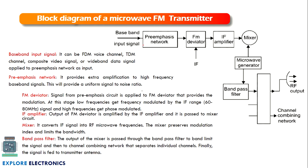The pre-emphasis network provides amplification to higher frequency signals, giving early amplification to reduce noise and provide a uniform signal-to-noise ratio. The output is then given to the FM deviator, along with an IF (intermediate frequency) carrier signal of around 60 to 80 megahertz. The amplified baseband signal acts as the modulating signal, and the FM deviator acts as a modulator. The modulated output is passed to the IF amplifier.